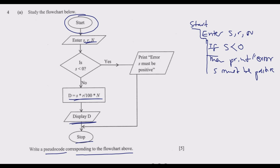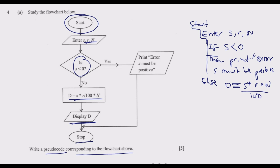Then ELSE — so after the IF branch, we write ELSE. That is, if s is not less than zero, what do we do? We calculate the value of d, which is s multiplied by error, then multiplied by n, over 100.